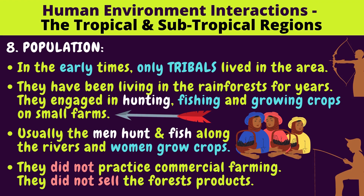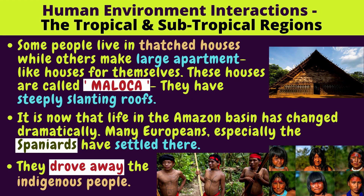Population: In the early times, only tribals lived in the area, having lived in the rainforests for years. They engaged in hunting, fishing, and growing crops on small farms. Usually, the men hunted and fished along the rivers while the women grew crops. They did not practice commercial farming and did not sell forest products — they just used resources for themselves. Some people live in thatched houses, while others make large apartment-like houses called malokha, which have steeply slanting roofs.